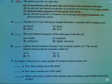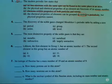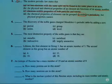Number four, the discovery of the noble gases changed Mendeleev's periodic table by adding a new. This question is assessing whether or not you know what the noble gases are in terms of their position on the periodic table.